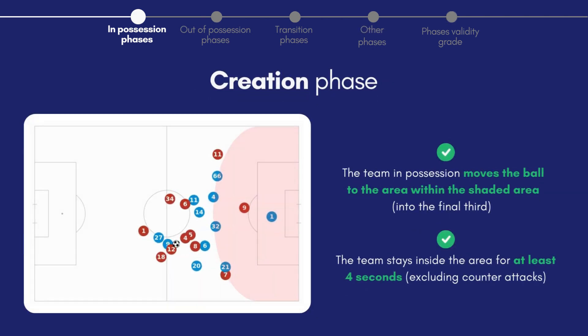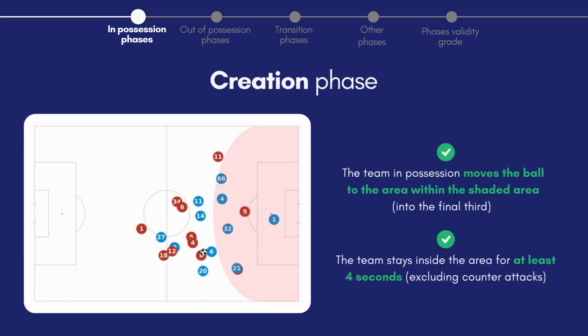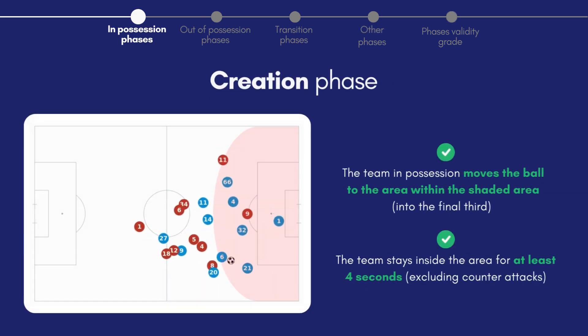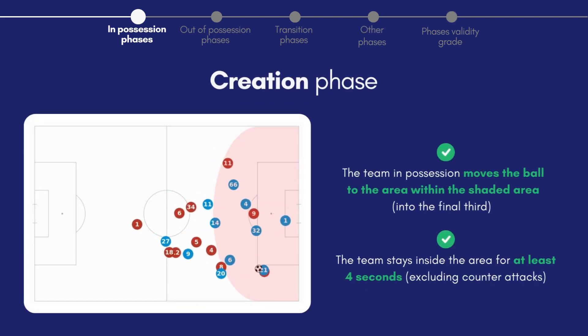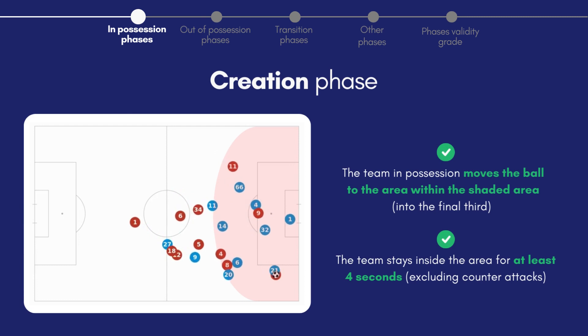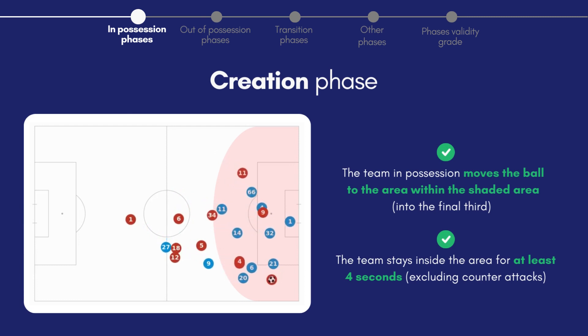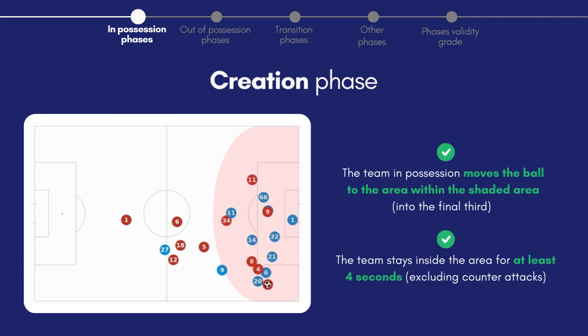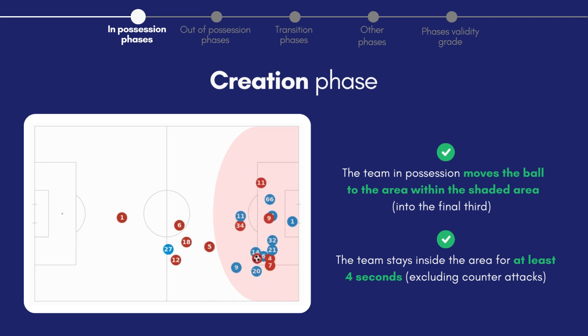The final phase of organized possession is creation, when the team with the ball is in the final third for at least four seconds and attempts to break down an opposition's low block by creating chances and scoring goals.